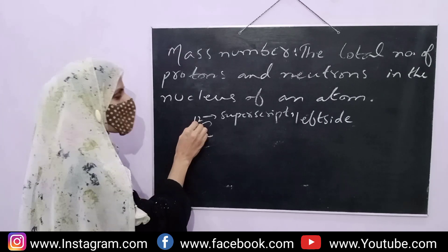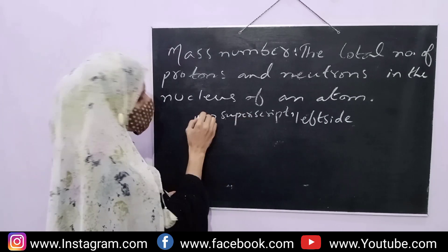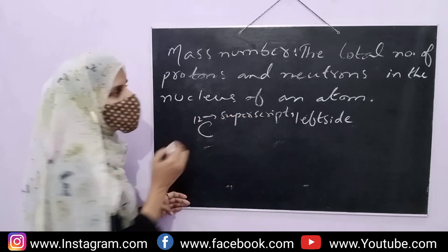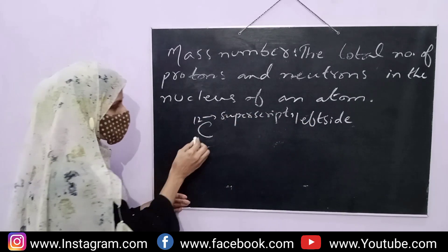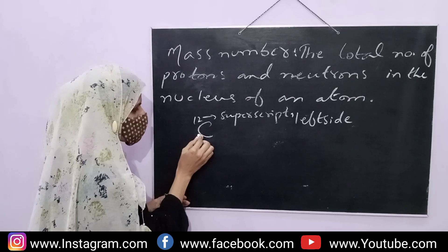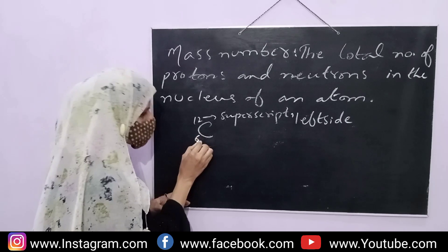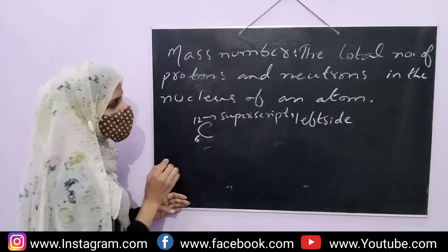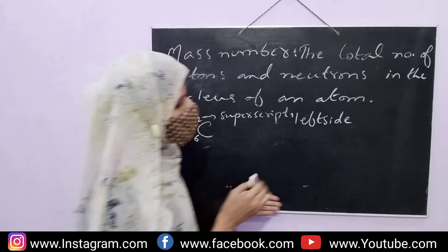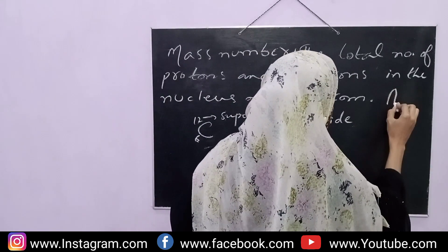The mass number is 12, shown as a superscript on the left-hand side. The atomic number is also on the left-hand side. The mass number is represented by A.